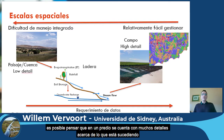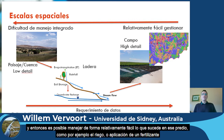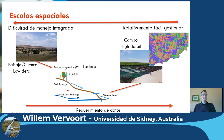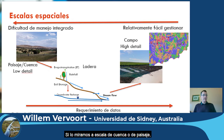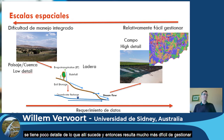To put that in a diagram: when you're on a field, you actually have a lot of detail about what is happening, and you can relatively easily manage what is on that field, whether that's irrigation or fertilizer application, because you are fully in control. If you are at the catchment scale, or the landscape scale, then you are not fully in control of everything that happens at each field, and you have very low detail of what is happening. So it's much more difficult to actually manage this.